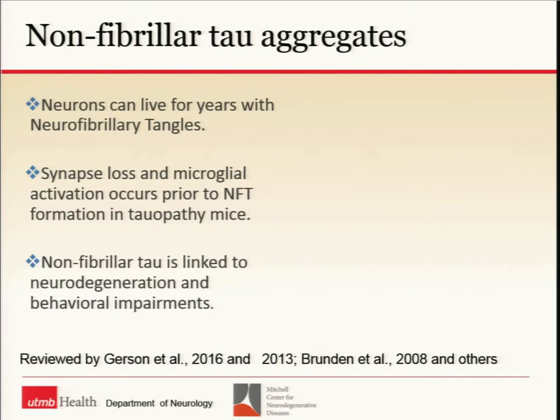Why focus on non-fibrillar or oligomeric tau? Because for years it was known that neurons can survive with neurofibrillary tangles. Brad Hammond's group confirmed this in mice using two-photon microscopy — a neuron can have a neurofibrillary tangle and still be functional. In most published animal models, synaptic loss and behavioral deficits form before neurofibrillary tangles, linking these mysterious soluble tau species to behavioral deficits.